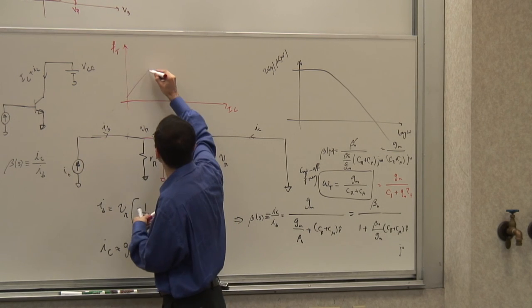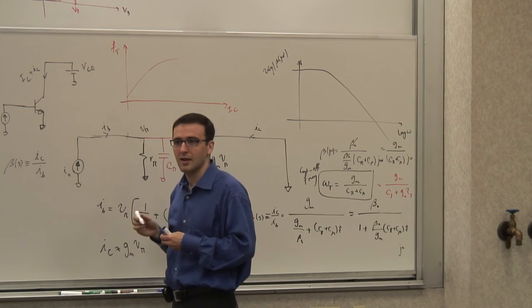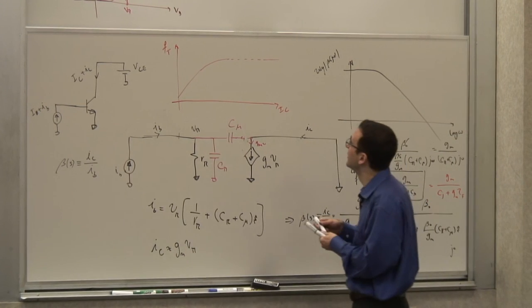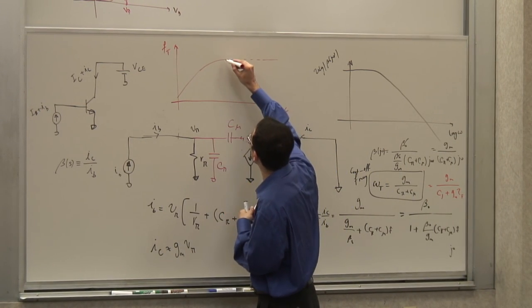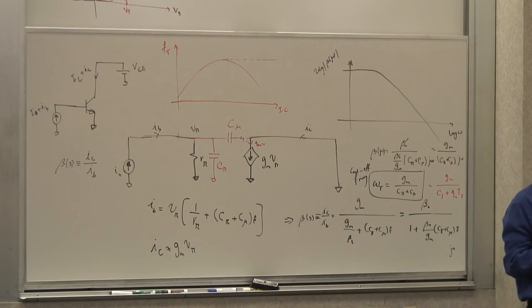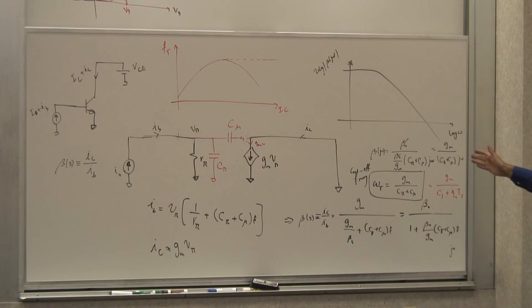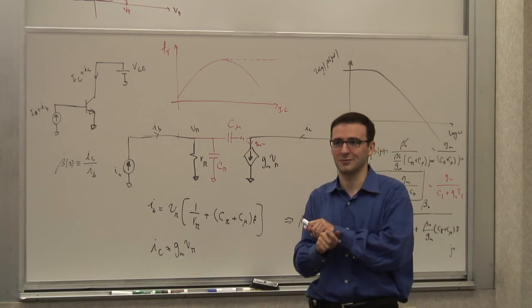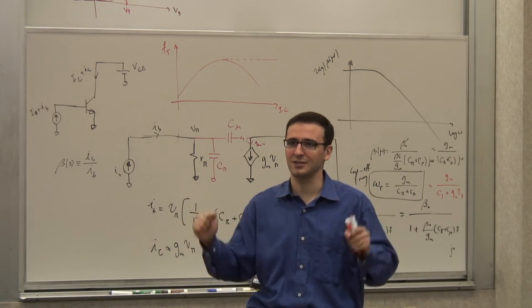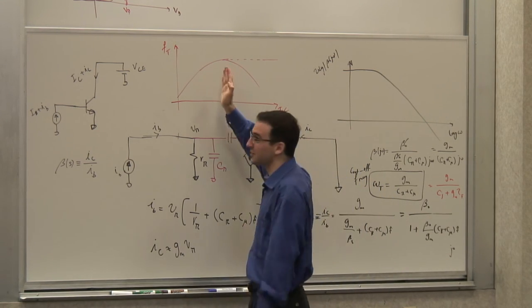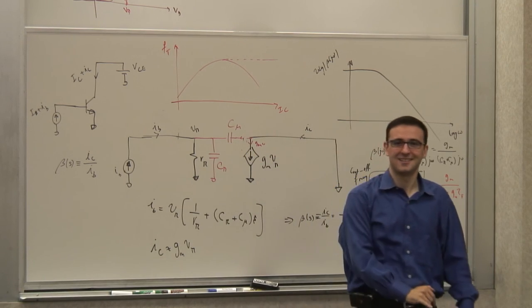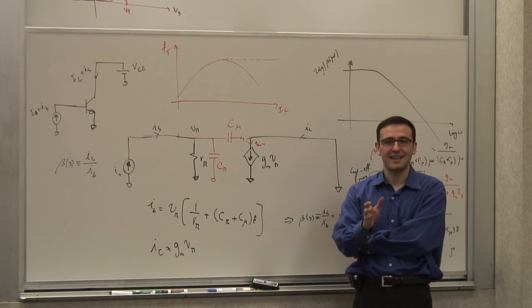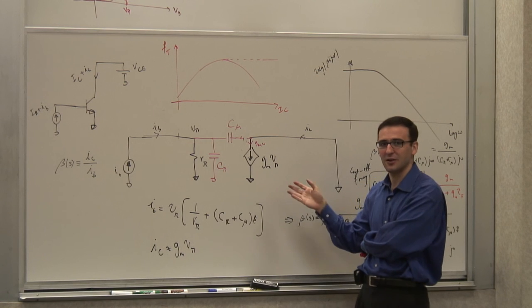So there's an optimal current for maximum FT. Whenever you see a data sheet that says '100 GHz FT transistor,' you can be certain that's for the smallest transistor under the best conditions at that optimal current point. You have to realize it doesn't mean you get 100 GHz FT under all circumstances.